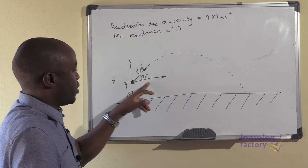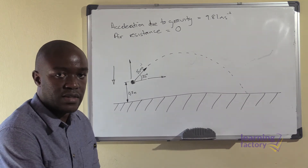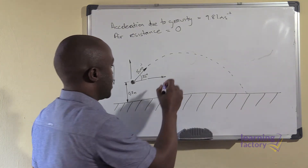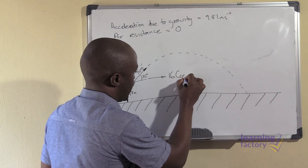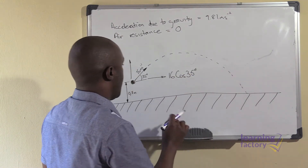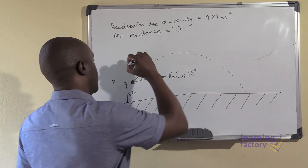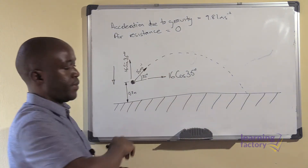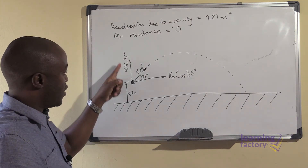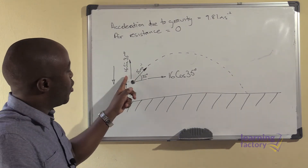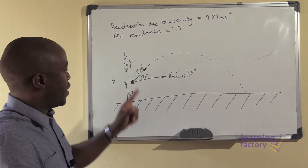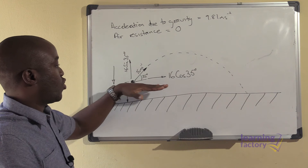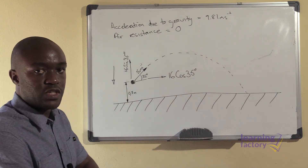What are the values of these components at the point when the projectile is released? Remember how to resolve our velocity. The horizontal component becomes 16 cosine 35 degrees, and the vertical component at that point is 16 sine 35 degrees. Remember that we've got an acceleration acting in the vertical plane, so any moment after its release the velocity is going to be different in the vertical. But throughout the motion, that velocity in the horizontal is going to stay the same.